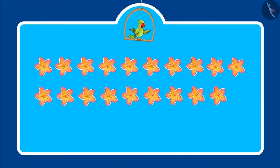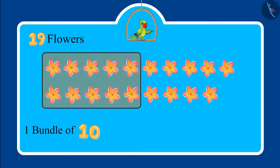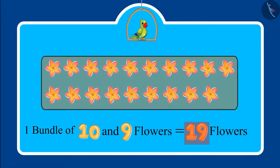These are some flowers, and the number of these flowers is written below them. Can you identify and tell me this number? Yes — this is one bundle of ten flowers and nine more flowers, which means in total 19 flowers. Very good children!